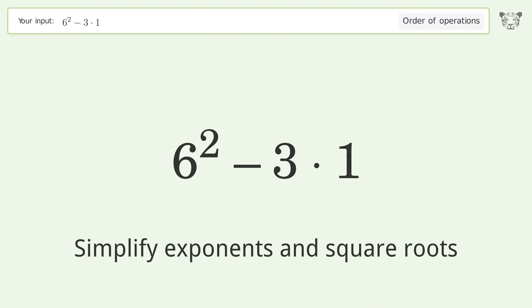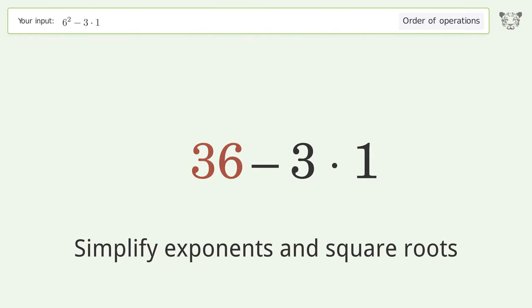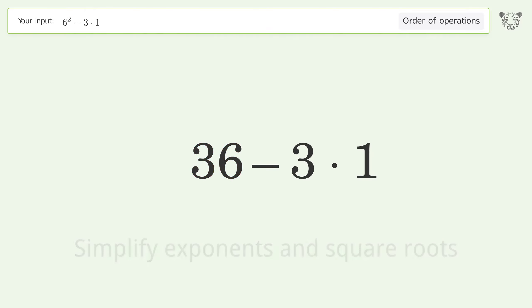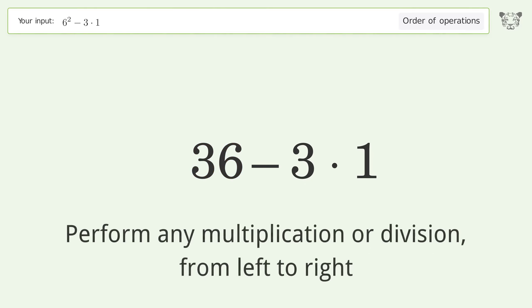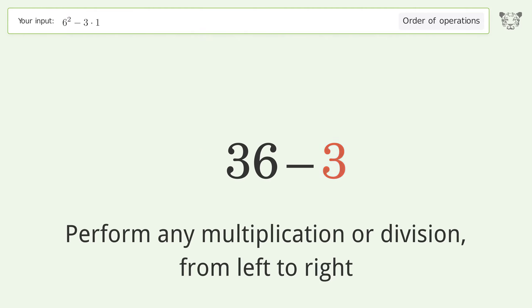First, simplify exponents and square roots: 6 to the power of 2 equals 36. Next, perform any multiplication or division from left to right: 3 times 1 equals 3.